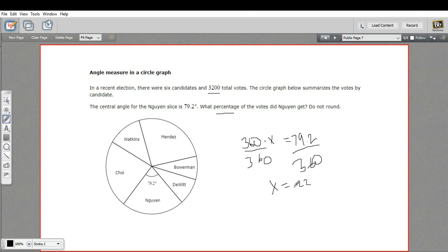And I got .22. And then when we convert a decimal back to a percentage, we're going to move the decimal two places. So this is 22% of the vote.